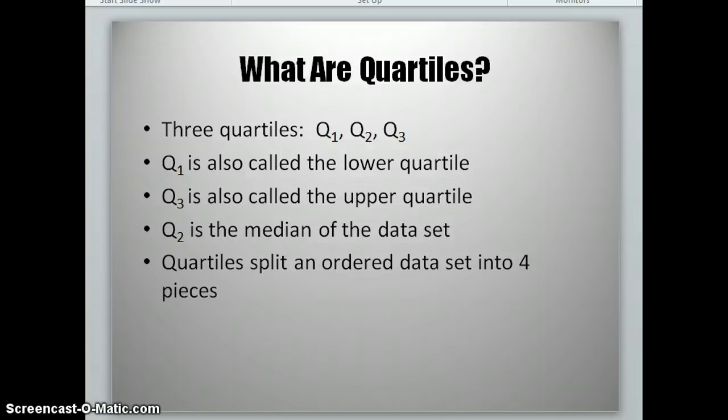First, let's define what quartiles are. There are three quartiles you'll be finding: Q1, Q2, and Q3. Q1 is also called the lower quartile, and Q3 is also called the upper quartile. Q2 is just the median of the data set, and this is something you already know how to find. What quartiles do is they split your ordered data set into four pieces. So let's take a look at how to find each quartile.